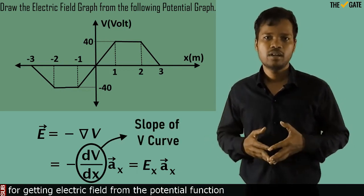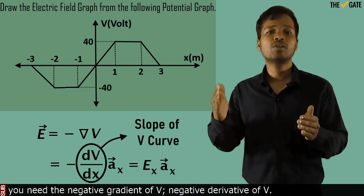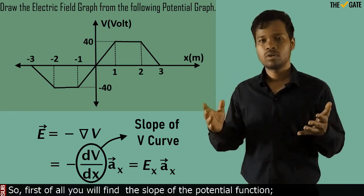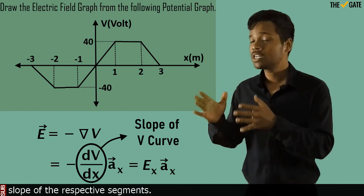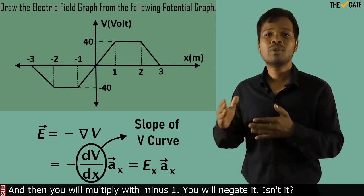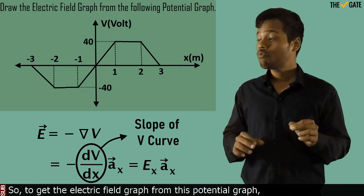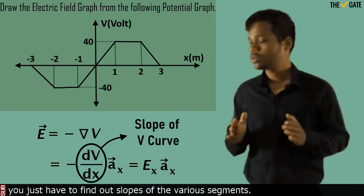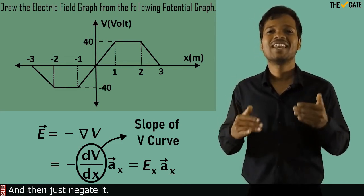What I am trying to convince you is that, for getting the electric field from the potential function, you need the negative gradient of V — the negative derivative of V. So, first you will find the slope of the potential function for the respective segments, and then you will multiply by minus 1, you will negate it. To get the electric field graph from the potential graph, you just have to find out the slopes of the various segments and then negate them.